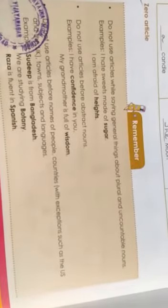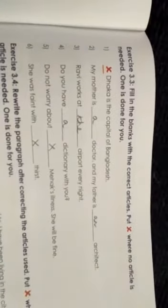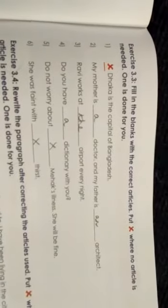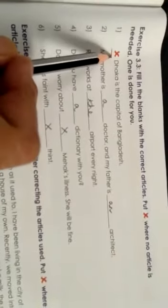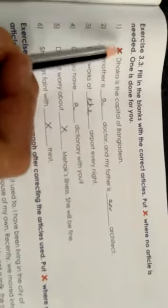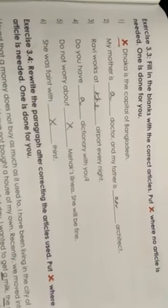Now let's do the exercise: fill in the blanks with the correct articles, or put a cross mark where no article is needed. One is done for you. 'Dhaka is the capital of Bangladesh' — you don't use any article before Dhaka. Then: 'My mother is a doctor and my father is an architect.' 'Architect' starts with 'a', which is a vowel, so we use the article 'an'.